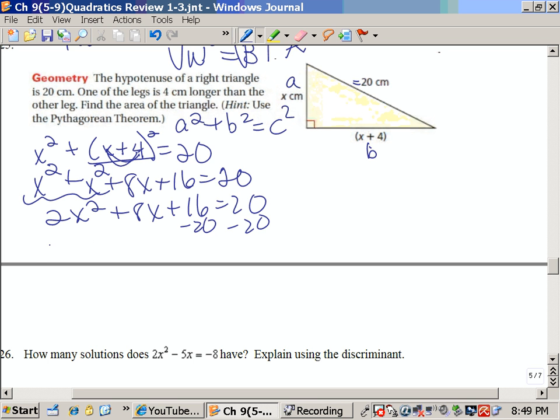I need to move the 20 to the other side, so that's 2x squared plus 8x minus 4 equals 0. Now I have to solve. I notice that they all have 2 in front, so I'm going to divide by 2, and that gives me much nicer x squared plus 4x minus 2 equals 0.